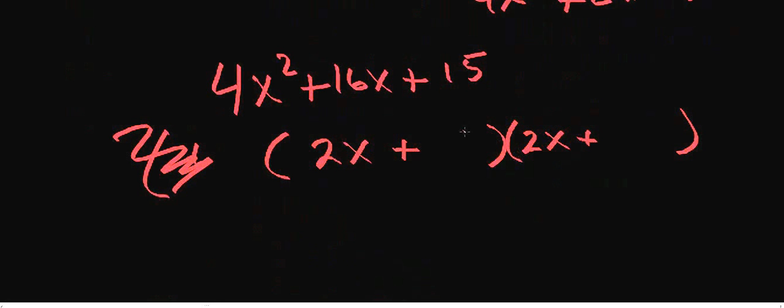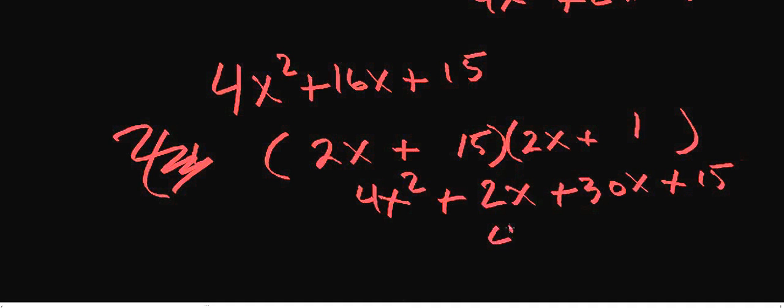Let's think about our factors of 15 that we want to plug in here. Let's try 15 and 1. So now you've got 4x squared plus 2x plus 30x plus 15. So now I've got 4x squared plus 32x plus 15. Well, that didn't work.